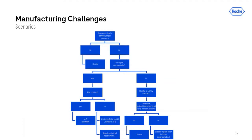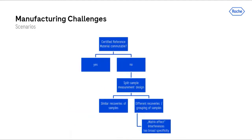All the various questions, aspects, and requirements from the previous slides can be summarized in a decision tree. Starting with the definition of the measurand, it addresses challenges and helps to find options for drafting a traceability strategy. A similar decision tree can also be drawn for the commutability of a reference material.